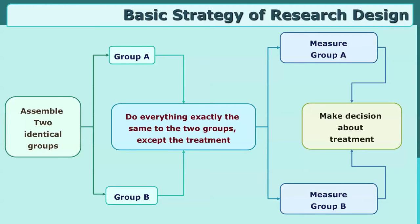There are many different types of designs, but the strategy remains the same. This visual shows the basic strategy of any experimental design. We have two groups — Group A and Group B — which are equated on aspects the researcher thinks may affect the score. Group A, the experimental group, is given a treatment; Group B, the control group, is not. After the treatment, both groups are tested again, and if there is a difference in scores, it may be attributed to the treatment.